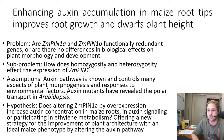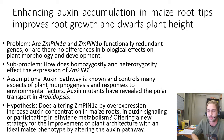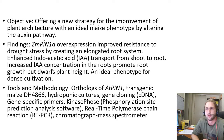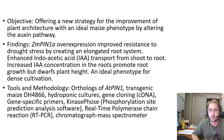Throughout this paper, the hypothesis was somewhat buried in the results and conclusion. Their hypothesis was: does altering ZmPIN1 by overexpression increase auxin concentration in maize roots and auxin signaling, or participating in ethylene metabolism, offering a new strategy for the improvement of plant architecture with an ideal maize phenotype by altering the auxin pathway? Their objective is to make better corn — corn that works in drought-stricken areas, stays standing with deeper roots, or shorter corn that can withstand higher wind speeds or use less material to grow the same amount of product.